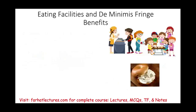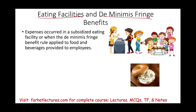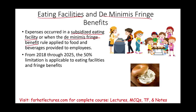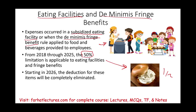Sometimes a company will have its own cafeteria — called an eating facility. Or sometimes when you take your coffee break, you might find bagels, donuts, or pizza there. Those are called de minimis fringe benefits. Expenses incurred in a subsidized eating facility or de minimis fringe benefits applied to food provided to employees: from 2018 to 2025, the 50% limitation applies to those. So when a company buys the bagels, they can only deduct 50% of it, and operating the facility is also 50% deductible. Starting 2026, those deductions are eliminated entirely — the government is trying to raise more money.